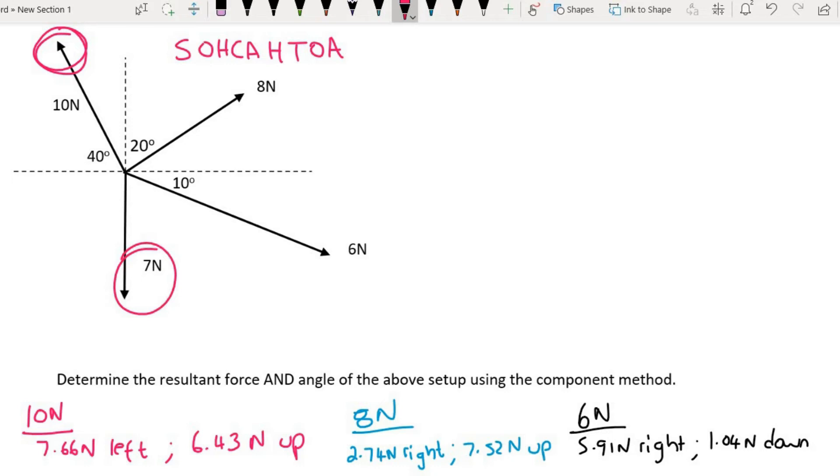The 7 newton one is very easy. That one does not have a left and a right, it only has a 7 newton down. Now we have taken all four of those forces and we have broken them up into lefts, rights, ups and downs. Now what we need to do is find the overall left and right, and then we also need to find the overall up and down.